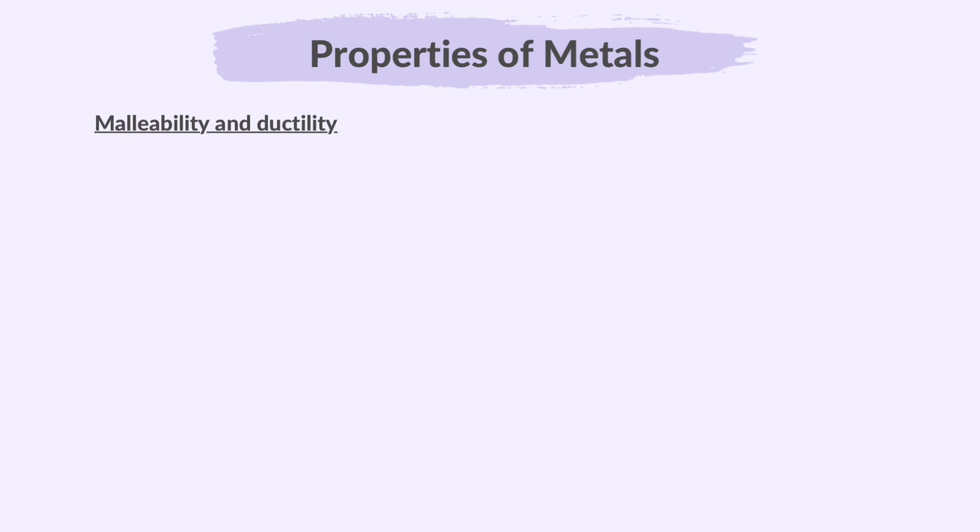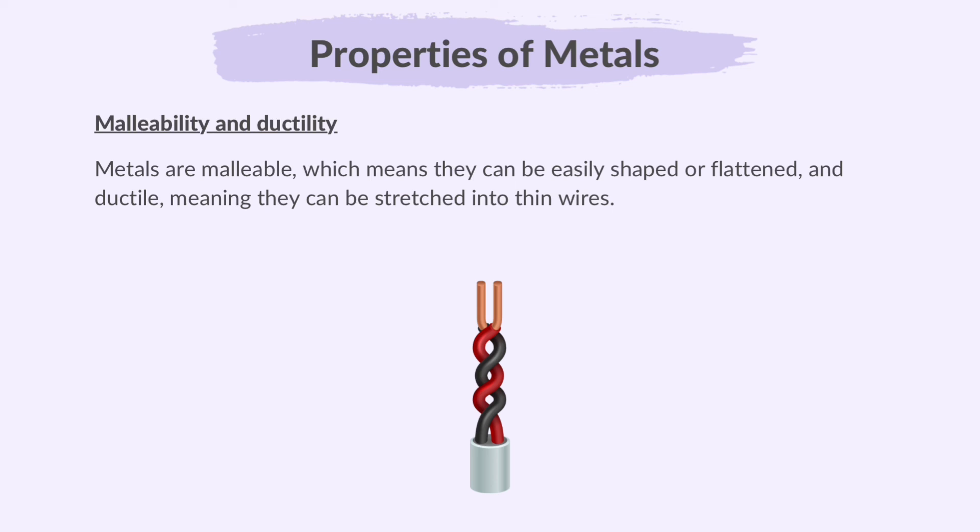Malleability and ductility. Metals are malleable which means they can be easily shaped or flattened and ductile meaning they can be stretched into thin wires. This is due to the ability of metal ions to slide past each other while the metallic bond remains intact.